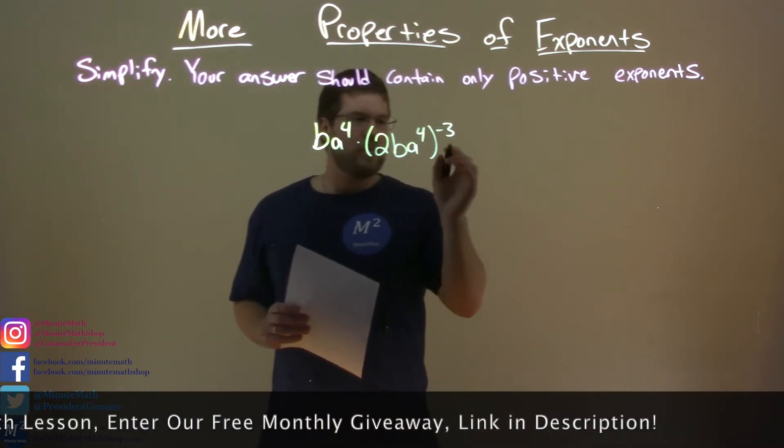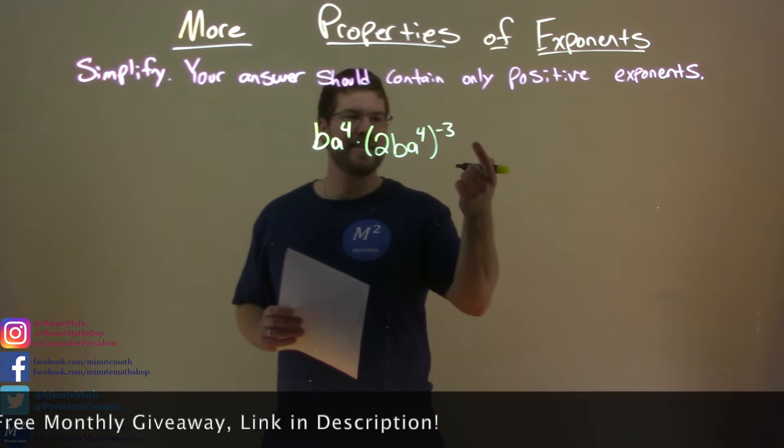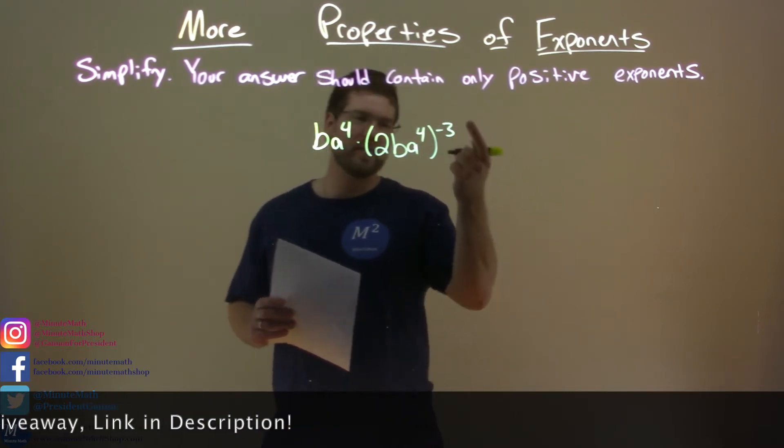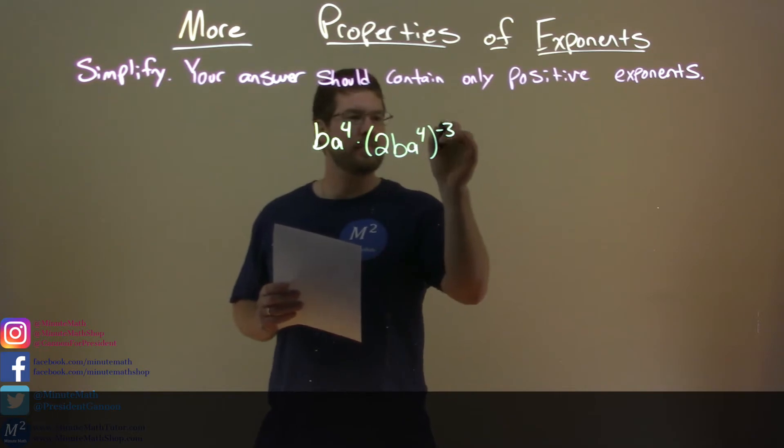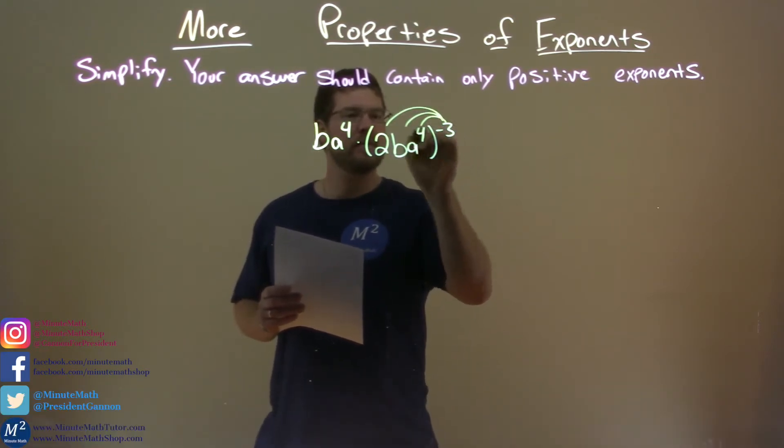What I'm going to first do is actually take this negative third power. There's a few ways. I can bring it to the denominator, but actually, no, I'm going to distribute it here to each part.